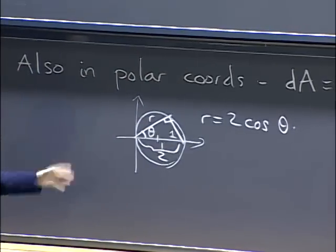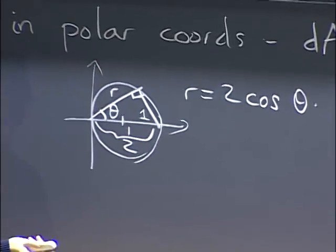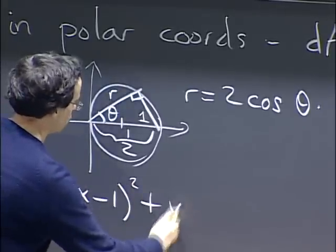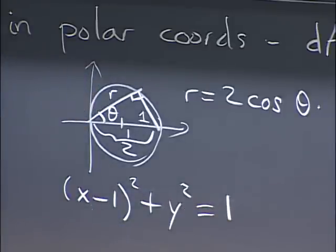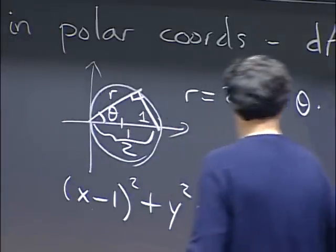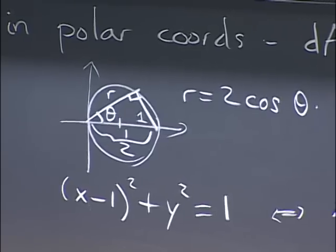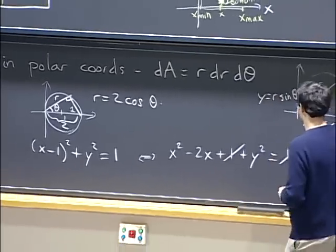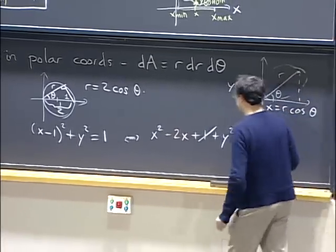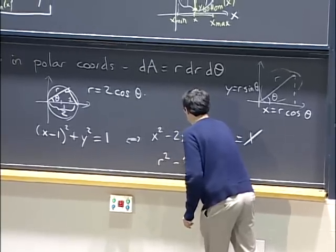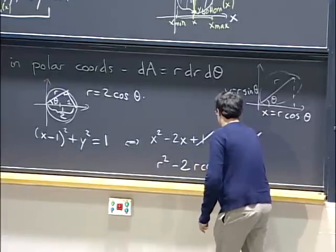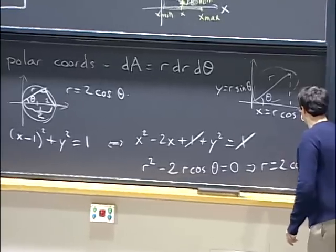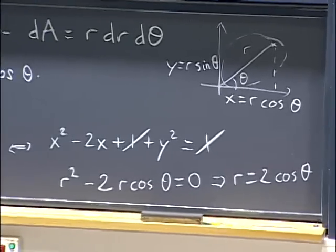Alternatively, starting from the Cartesian equation (x−1)² + y² = 1, expanding gives x² − 2x + 1 + y² = 1. The ones simplify, x² + y² becomes r², and −2x becomes −2r cosθ = 0. Simplifying by r gives r = 2cosθ. Two ways to get the same polar equation.